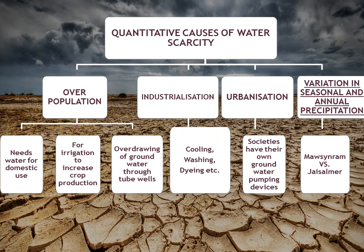There are many causes of water scarcity. Now we are going to study the quantitative causes of water scarcity — quantitative causes are those related to the amount of water. The first cause is overpopulation: due to excess population, more water is needed for domestic use such as washing clothes, drinking, bathing, and many other things. Also, to increase crop production, fields need to be irrigated. Many people have installed tube wells and extract groundwater excessively.